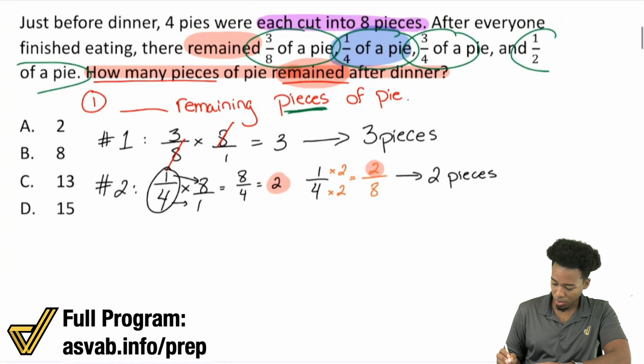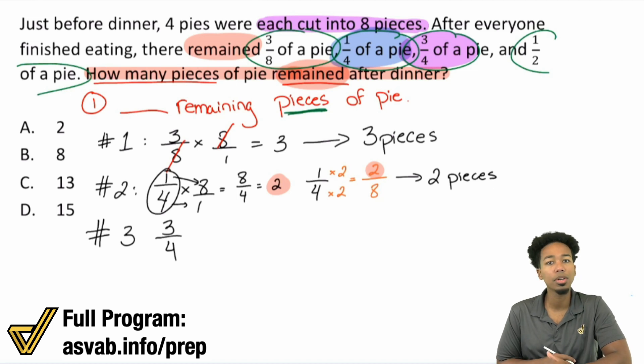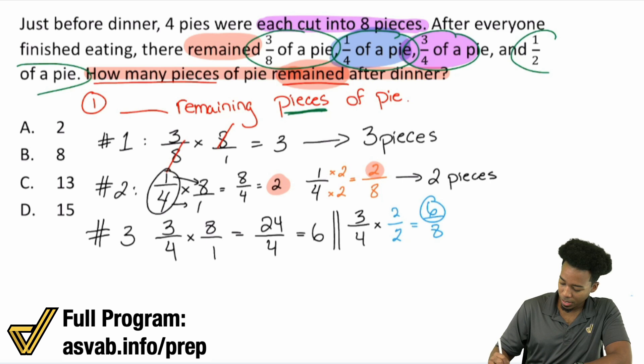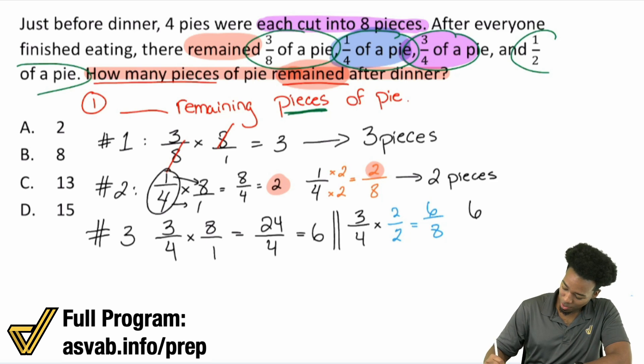Let's take a look at pie number 3. So number 3, we see over here in purple, we have 3 quarters of a pie. So 3 quarters of a pie, what does that mean? We're going to do 3 quarters times 8 or we can make the denominator 8. Either way is going to work. So watch. If I go ahead and multiply this by 8, what we end up getting is 24 over 4, which is 6 pieces. Or we can take 3 quarters and multiply that by 2 over 2. Because if we do that, we get 6 over 8. 6 out of the 8 pieces. Either way, you get 6 pieces.